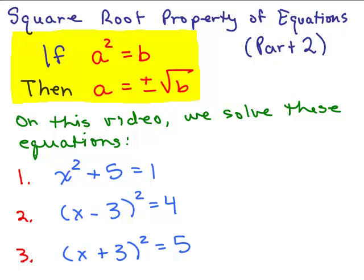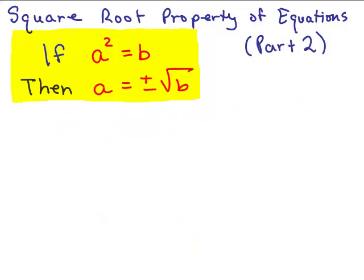This is part 2 of using the square root property to solve quadratic equations. The square root property says if a squared equals b, then a equals plus or minus the square root of b. Let's start off with a problem to recall how to do these.